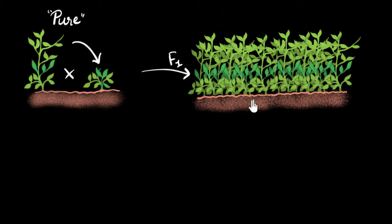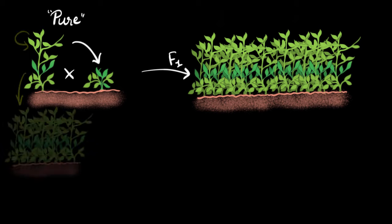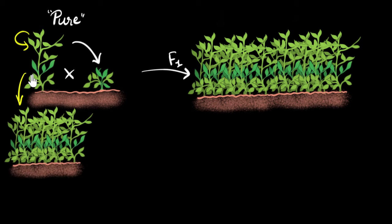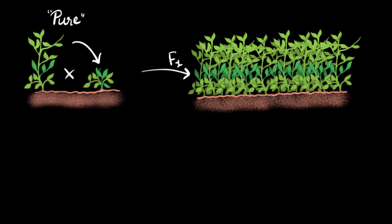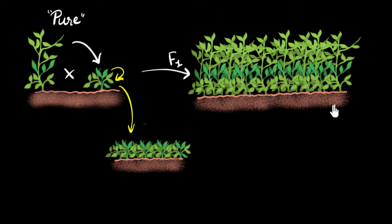Mendel was wondering whether these tall plants were the same as the pure tall plants. What do we mean by pure? Pure means if you were to self-fertilize it — if you self-fertilize a pure tall plant, then all its offsprings would be tall. Similarly, if you self-fertilize a pure short plant, all its offsprings would be short. That's what we mean by pure.